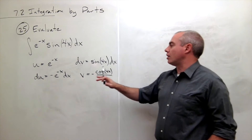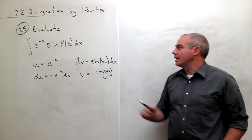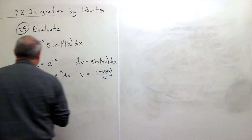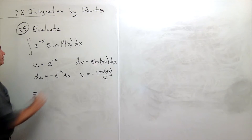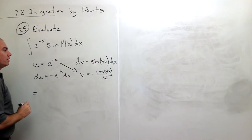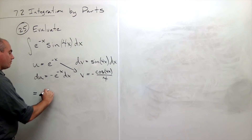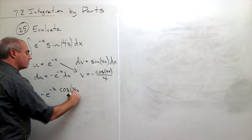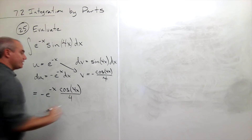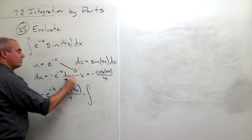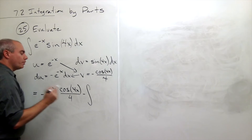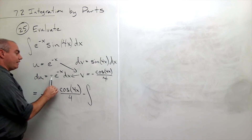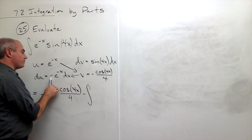We've got our u, our dv, our du, and our v, and now we can rewrite this using integration by parts. What we get is u times v: negative e to the minus x times cosine of 4x over 4, minus the integral of v du. Notice here I've got a lot of negatives going on, so be a little bit careful. I've got a negative here and a negative here, which gives me a positive.